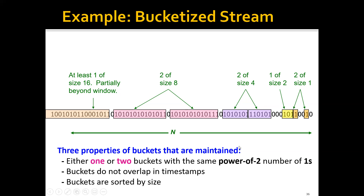We can track the buckets of size one — we see it has only two buckets of size one. It has only one bucket of size two, and two buckets of size four. So one, two, four are all powers of two, and the first property is maintained. For the second property, buckets do not overlap in timestamps — this is also satisfied. For the third property, buckets are sorted by size: size one, size two, size four, size eight — all well sorted. Therefore, all three properties are maintained.